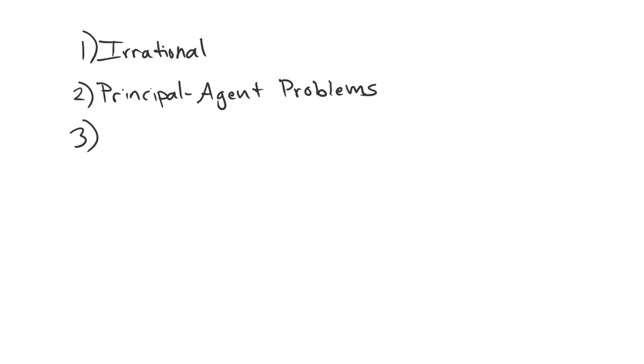The third class of explanations is looking at the absence of those two. So we would think about these as rational, unitary actor explanations for war. These are situations where we're thinking about a leader who is acting in good faith for his or her national interest and is capable of processing information properly. This third class is the type of explanation that we're going to be focusing on in this course.